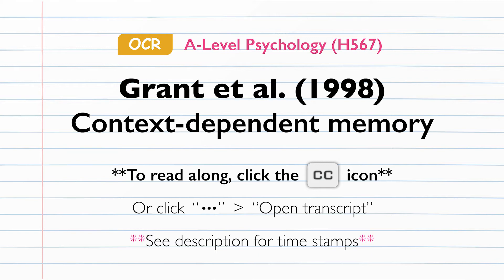Procedure. Participants were asked to read an article through one time as if they were reading it for a class assignment. They were allowed to highlight and underline as they read. Participants were informed that their comprehension would be tested with both a short answer test and a multiple choice test. The topic of the article was about psychoimmunology, and participants' reading time was recorded by the experimenter. All participants wore headphones while they read. Participants in the silent condition were told they would not hear anything over the headphones, and those in the noisy condition were told they would hear moderately loud background noise over the headphones but that they should ignore it. The background noise consisted of an audio recording of a university cafeteria at lunchtime.